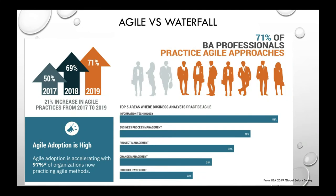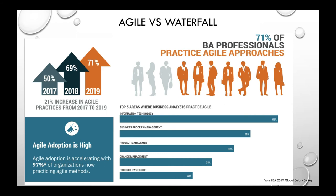Now for some statistics from the 2019 IIBA Global Salary Survey: 71% of BA professionals are practicing agile approaches. Agile is getting a lot of adoption, so as you look to become a business analyst you need to understand agile. This is a big jump from 50% in 2017 and 69% in 2018, showing that adoption is very high and companies are trending strongly towards agile methodologies over waterfall.